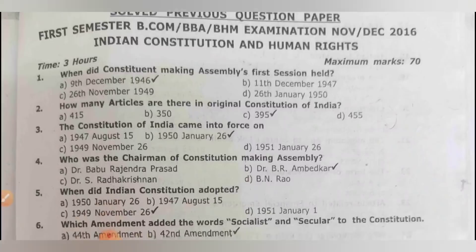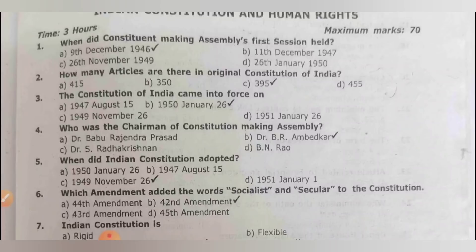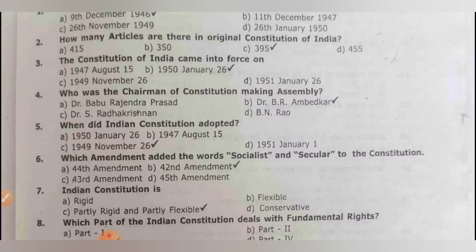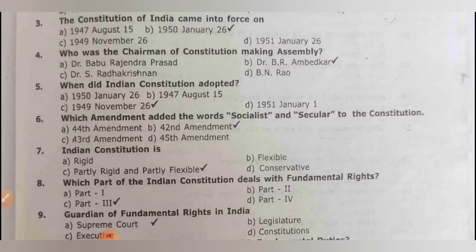How many articles are there in the original Constitution of India? There are 395 articles in the original constitution. The Constitution of India came into force from our Republic Day, that is 26th January 1950.